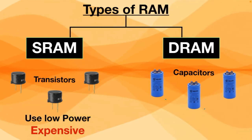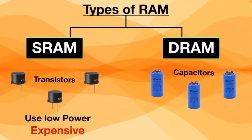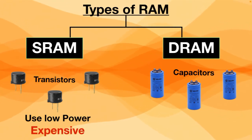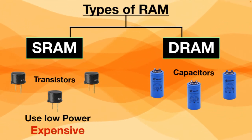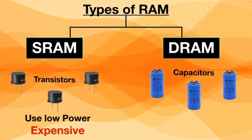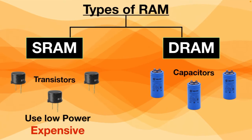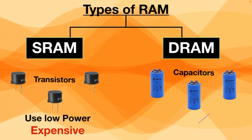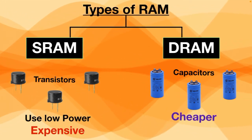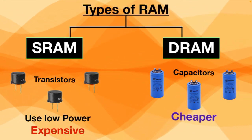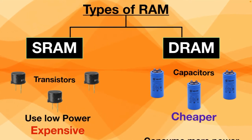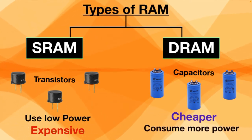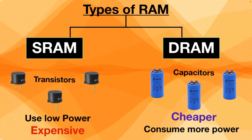When the power is cut, electrical charges disappear and the RAM is cleared. The benefit of using DRAM is that it is cheaper and offers better memory capacity, but it's a bit slower when accessing data and consumes more power.